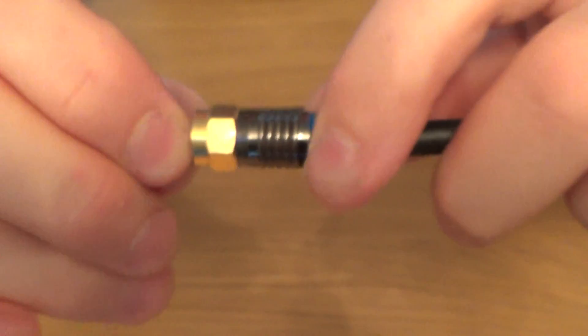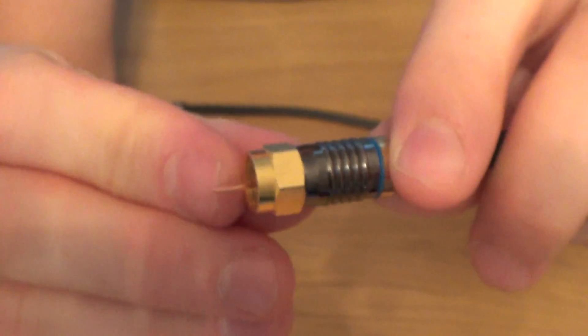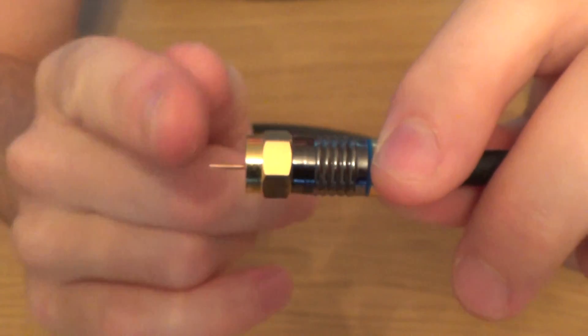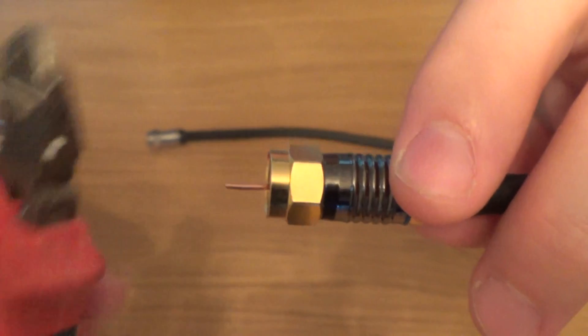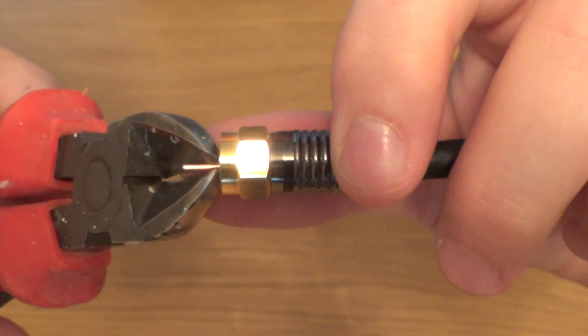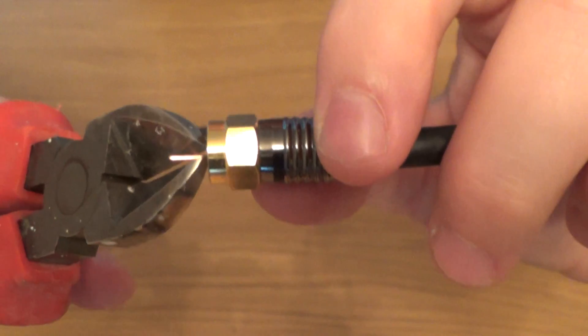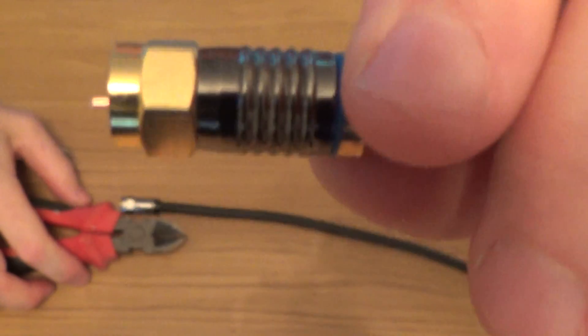And then what we want, we want about two to three millimetres of this central conductor coming past the edge here. And if you cut it at a slight 45 degree angle, it makes it a little easier to get into the equipment. Like so.